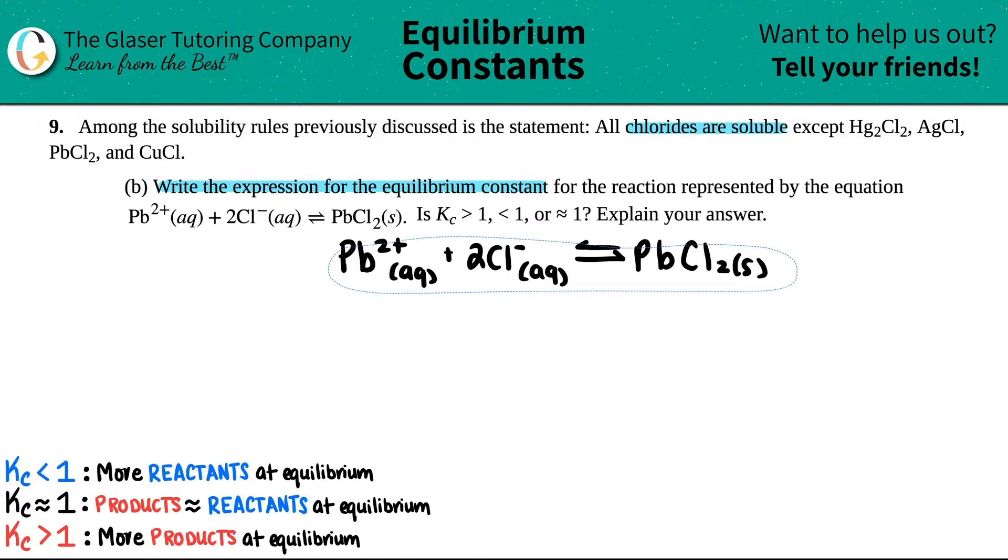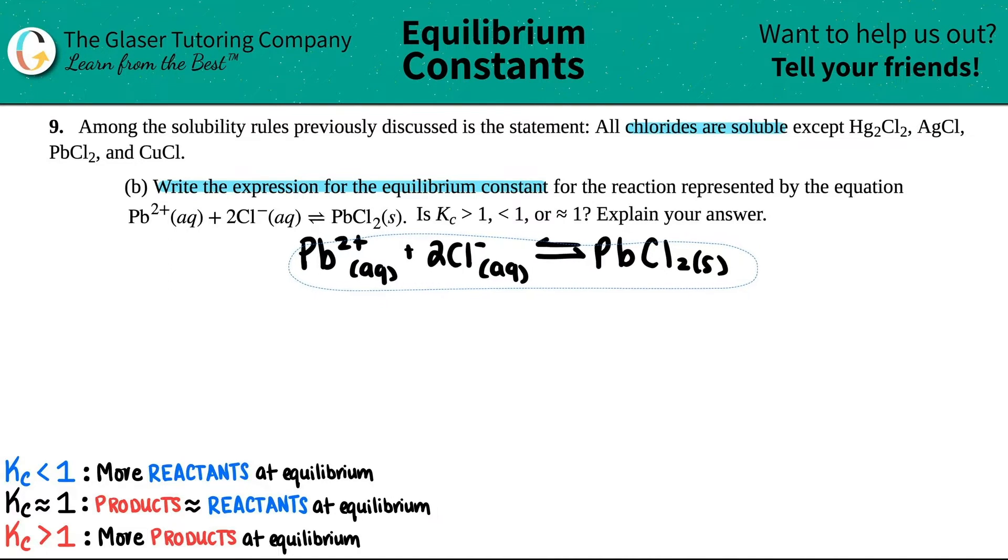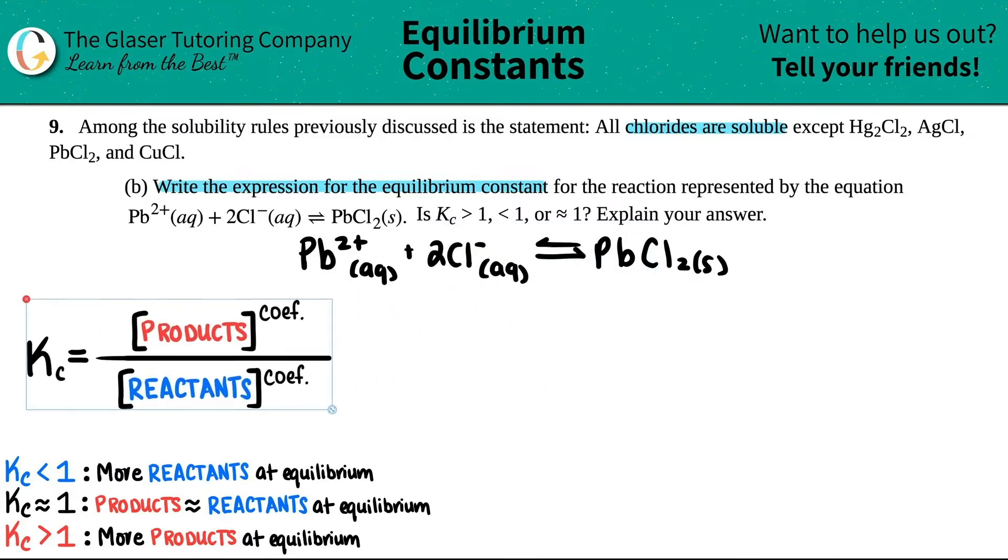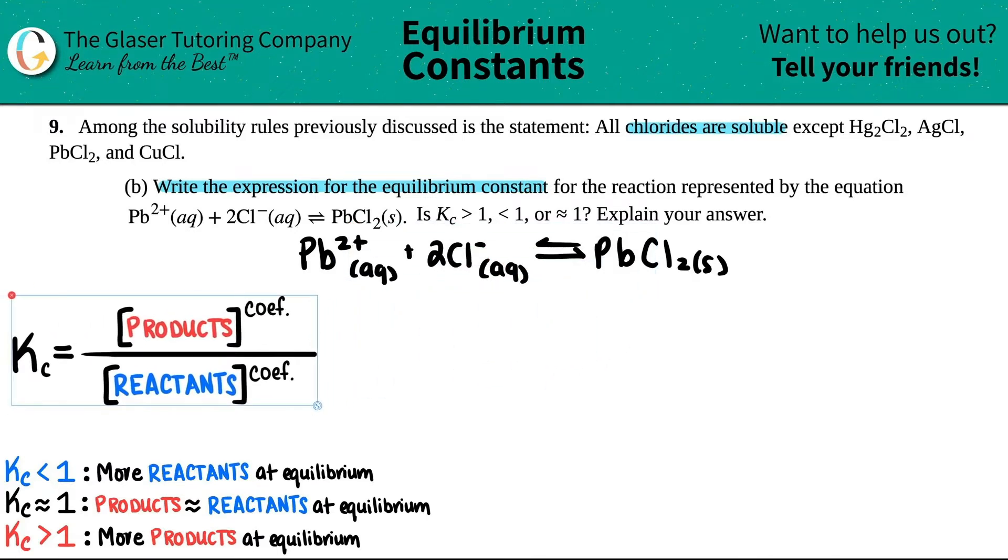So let's first write out our equilibrium constant. There's a general formula for this. I'm going to put it over here. And I always call it as just products divided by reactants. It's as simple as that.